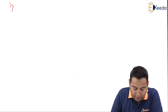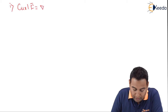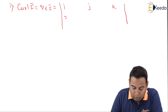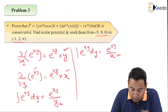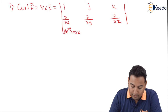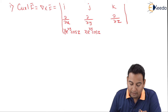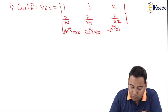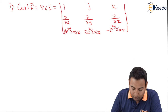Let's start with part one: curl of F-bar. We need to prove it is irrotational or conservative. Del cross F-bar equals the determinant with i, j, k in the first row; ∂/∂x, ∂/∂y, ∂/∂z in the second row; and the components: y·e^(xy)·cos(z), x·e^(xy)·cos(z), and −e^(xy)·sin(z) in the third row. We will also need the u·v rule: u·dv + v·du.